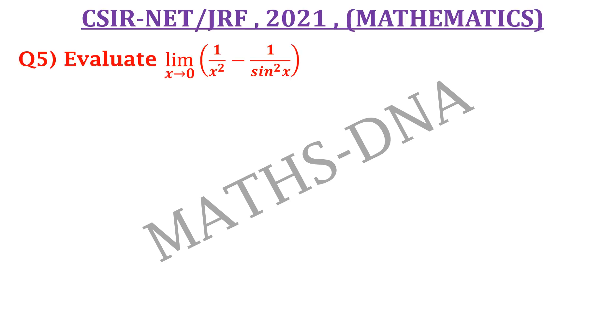Moving on to the question. Evaluate limit x tends to 0, 1 upon x square minus 1 upon sin square x. The options are: a) 1 upon 3, b) 1 upon 6, c) minus 1 upon 3, and d) minus 1 upon 6.